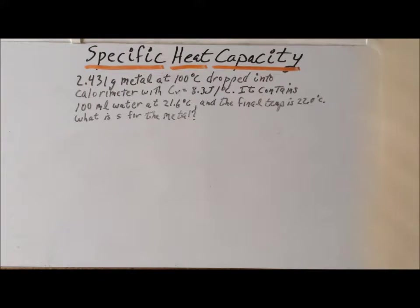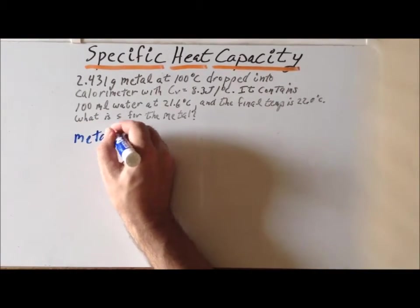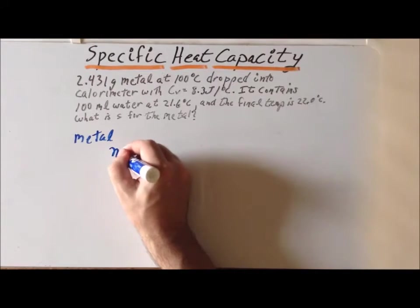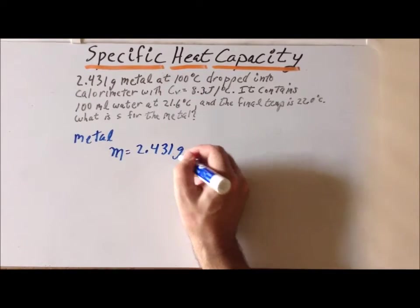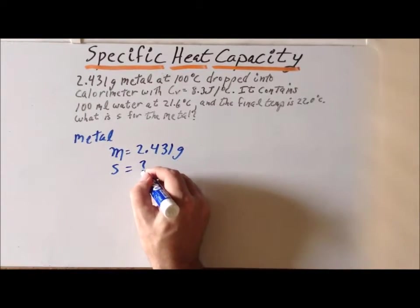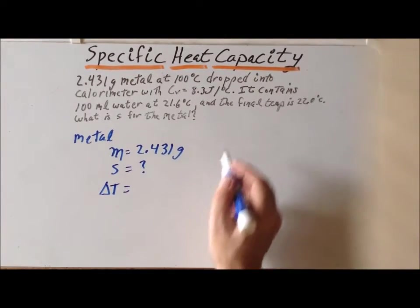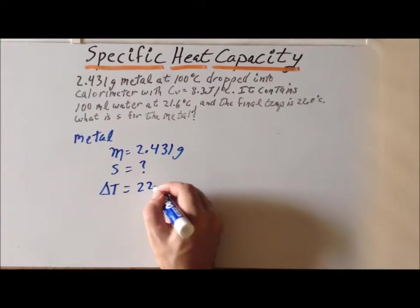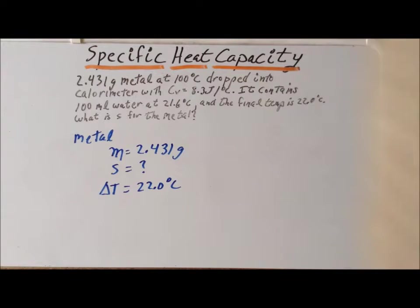The last heat flow to calculate is for the metal. So, we know that the mass of the metal is 2.431 grams. The specific heat capacity, that's to be determined, that's unknown. The change in temperature is the final temperature, 22.0 degrees centigrade. Our final temperature will always be a situation where all the elements of the system are all in equilibrium, so they all have the same temperature,